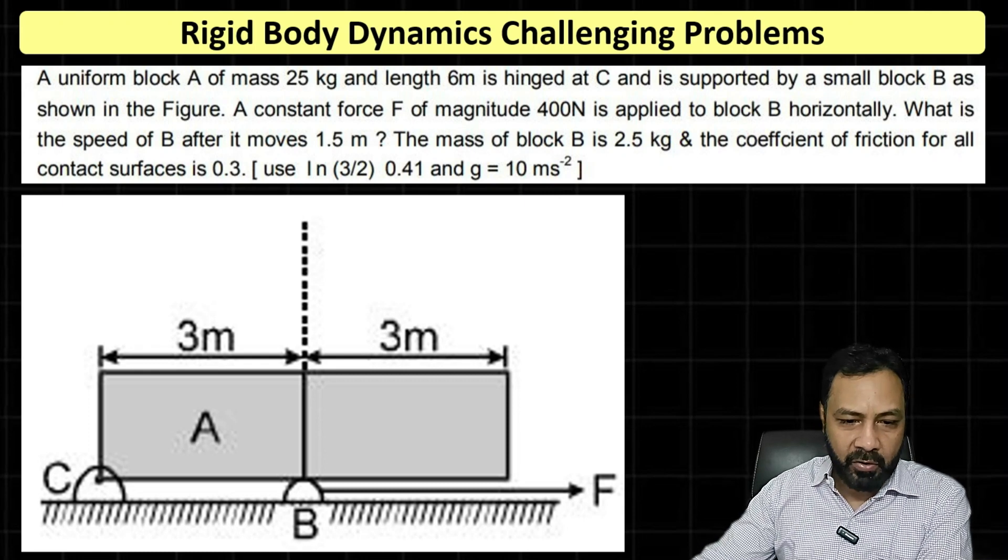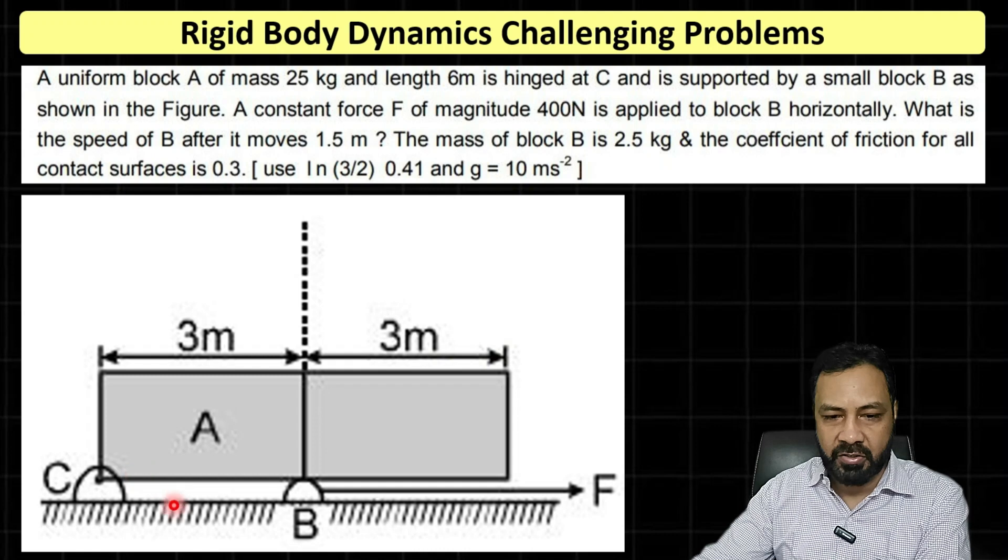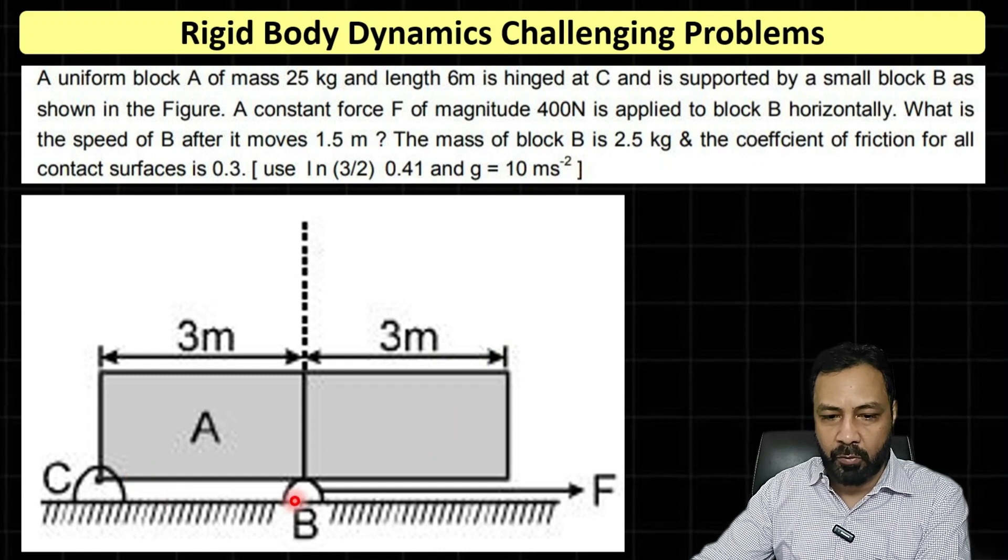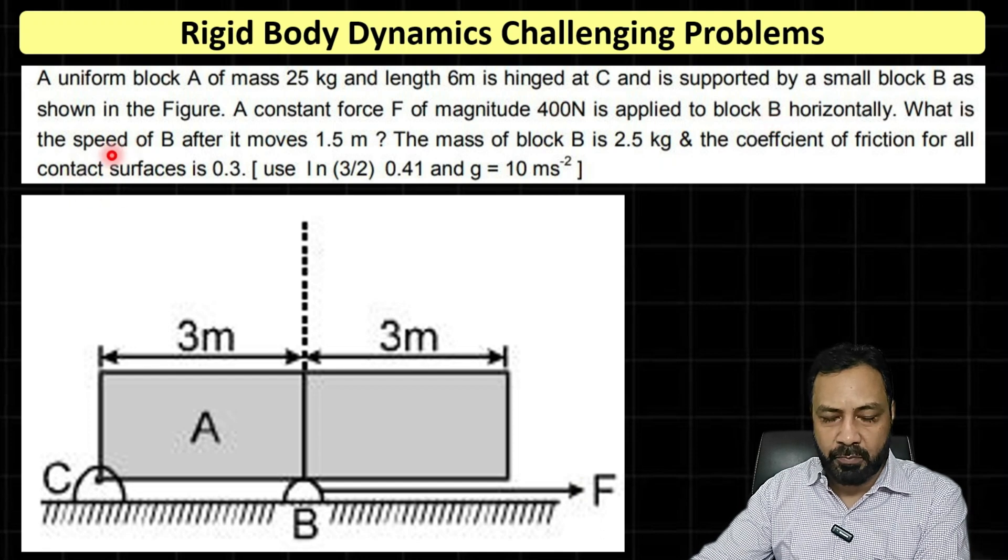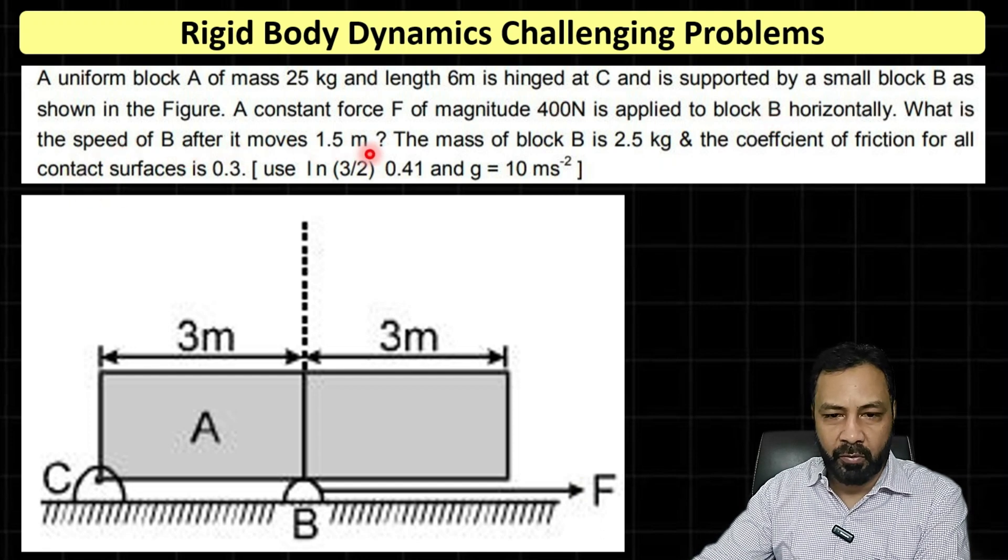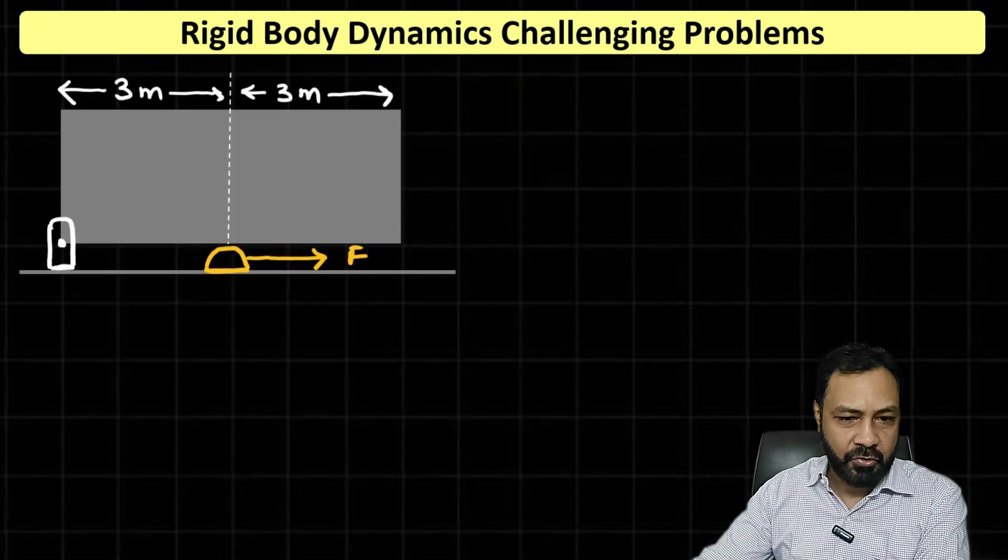The question states: a uniform block A of mass 25 kg and length 6 meters hinged at C, supported by small block B, and pulled by a constant force F of 400 Newtons horizontally. What is the speed of B after it moves 1.5 meters? Mass of block B is 2.5 kg. So let's proceed to solve this question.